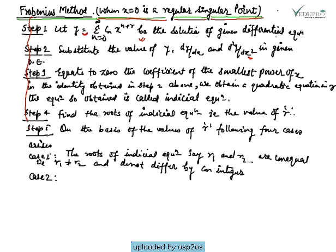In step two, we differentiate this equation with respect to x to find dy/dx and d²y/dx², and substitute the values of y, dy/dx, and d²y/dx² into the given differential equation. In step three, we equate to zero the coefficient of the smallest power of x in the resulting identity.